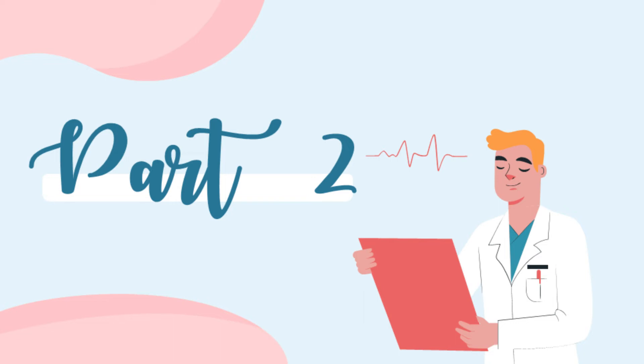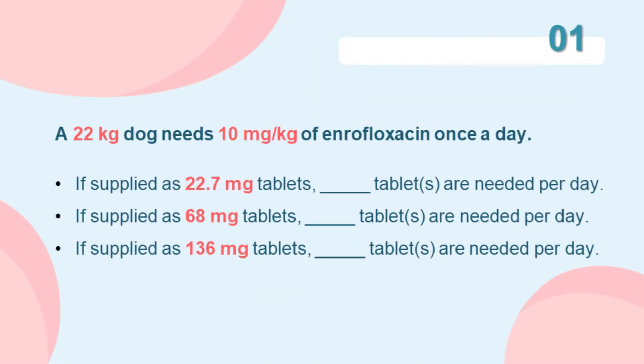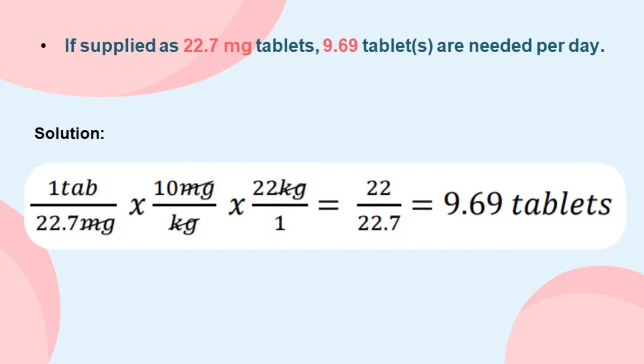Part 2: For this section, we are going to calculate drug dosage or number of tablets of a certain size needed for a given dose of medication. A 22-kilogram dog needs 10 milligrams per kilogram of enrofloxacin once a day. If supplied as 22.7-milligram tablets, how many tablets are needed per day? To calculate, 1 tablet divided by 22.7 milligrams is multiplied by 10 milligrams per kilogram and 22 kilograms. Cancel out the common units. The answer is 9.69 tablets.